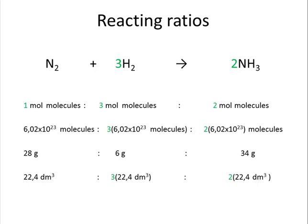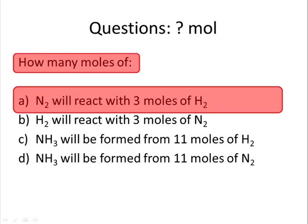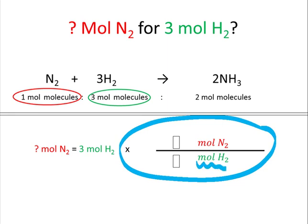We've already written the reacting ratio of this particular reaction in various forms. Now we're going to use that to solve problems related to the reaction. How many moles of nitrogen will react with 3 moles of hydrogen? We need to multiply this by a unit factor with moles hydrogen at the bottom and moles nitrogen at the top.